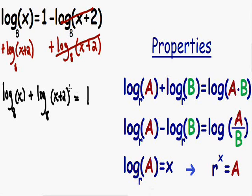On the right hand side the only thing we're left with is a positive 1. So now we have got all our log terms on the left hand side and everything else on the right hand side. The next thing that we need to do is rewrite both these log terms as one single log.